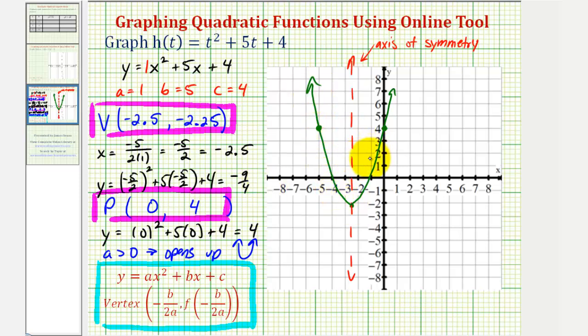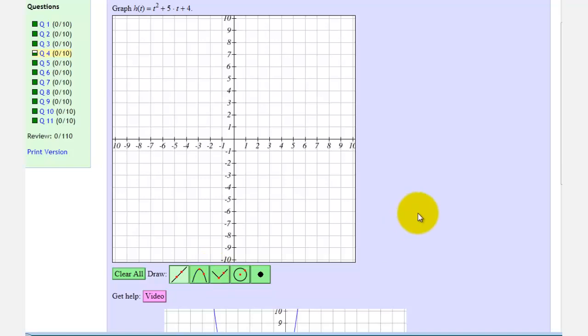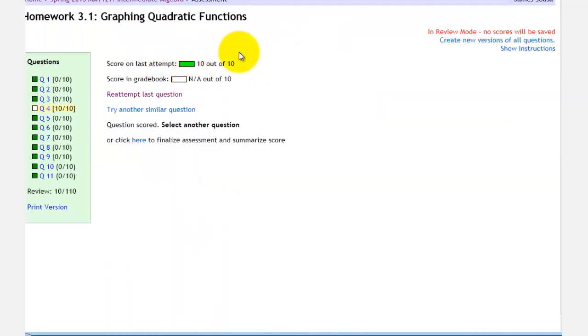Now let's graph this using our online graphing tool. First we'll click on the parabola graphing tool, which is here. Next we'll click on the vertex, which was negative 2.5, negative 2.25, approximately here. Then the second point was the y-intercept of 0, 4, which is here. Let's check it, and we graphed it correctly. Notice 10 out of 10. I hope you found this explanation helpful.